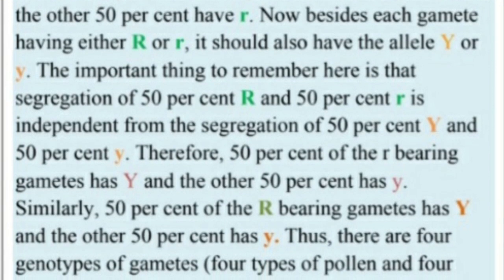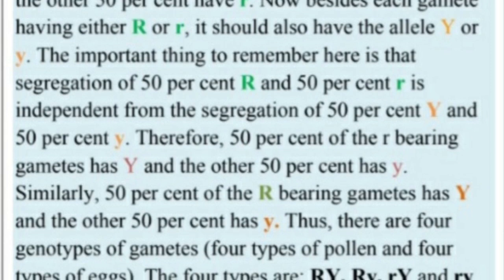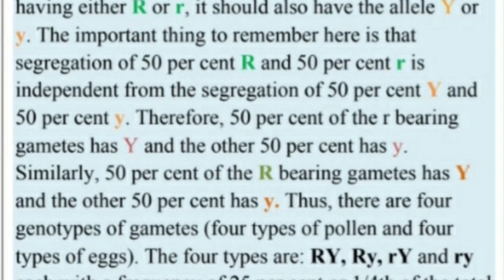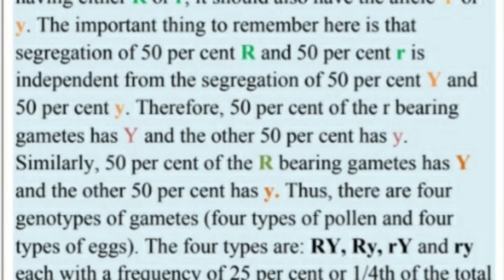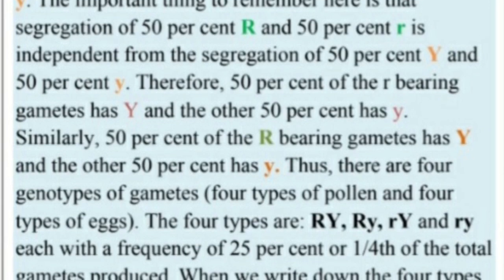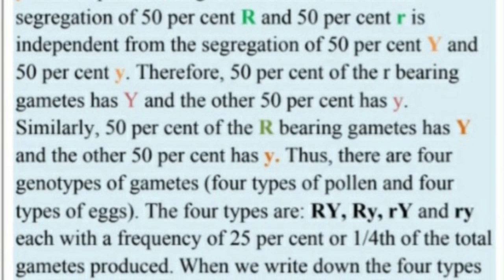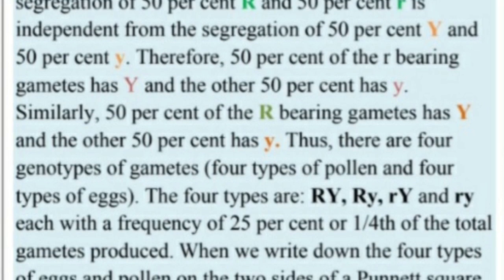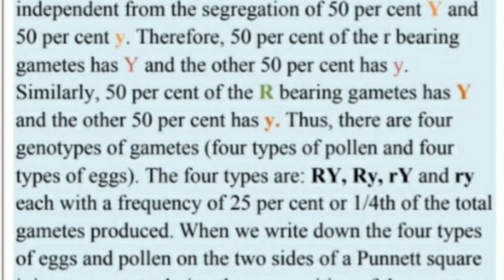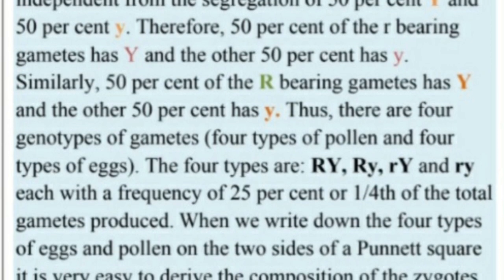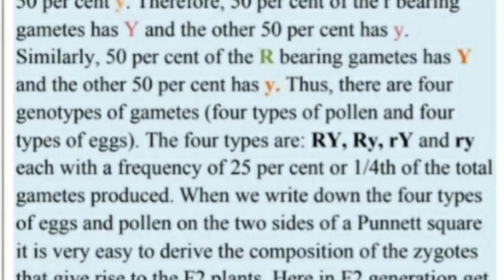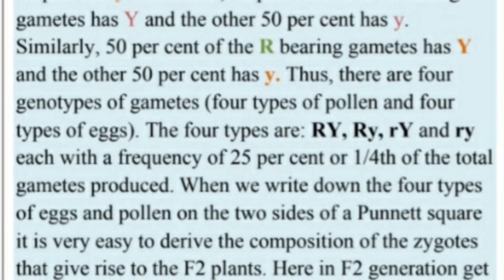Therefore, 50% of R-bearing gametes have capital Y and 50% have small y. Similarly, 50% of the r-bearing gametes have capital Y and 50% have small y. These genes assort independently. Thus, there are four genotypes of gametes — four types of pollen and four types of eggs.